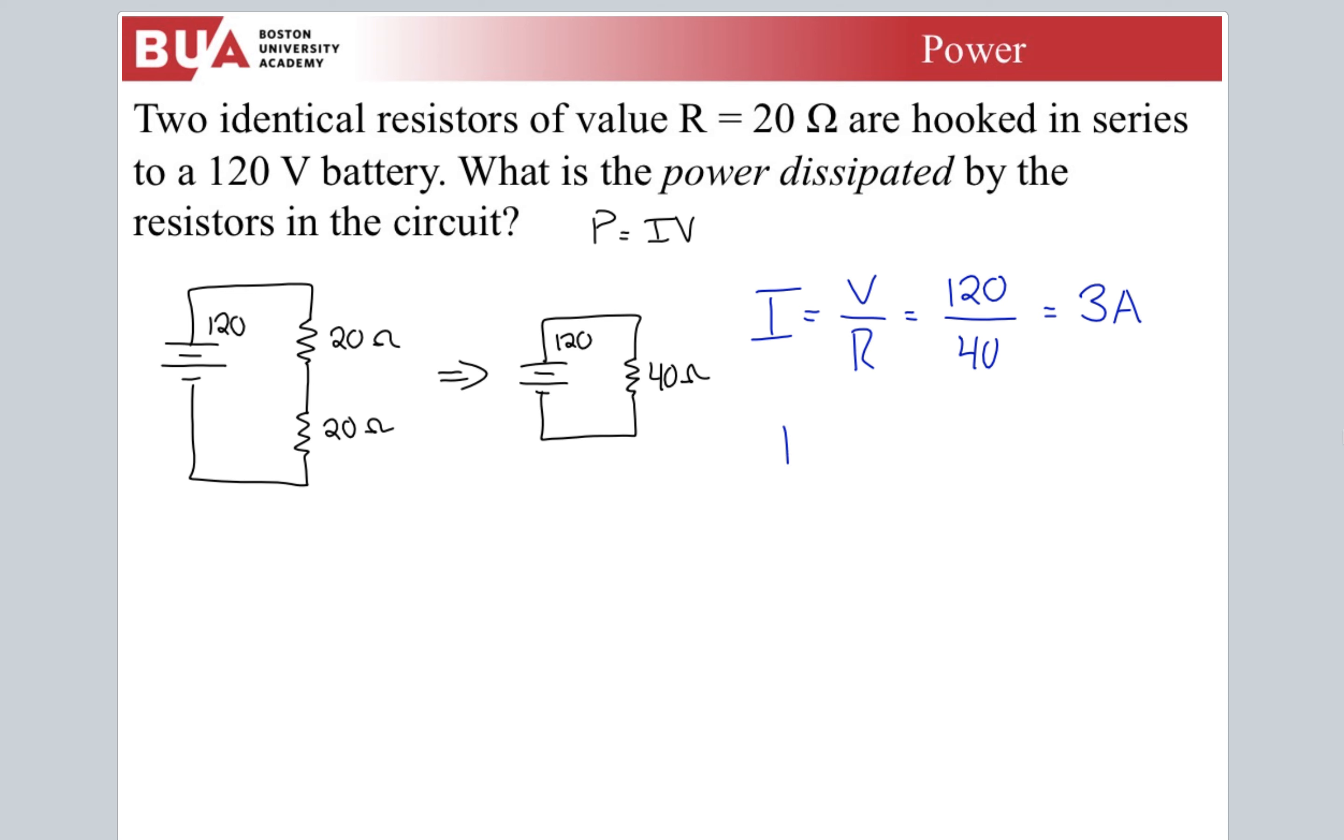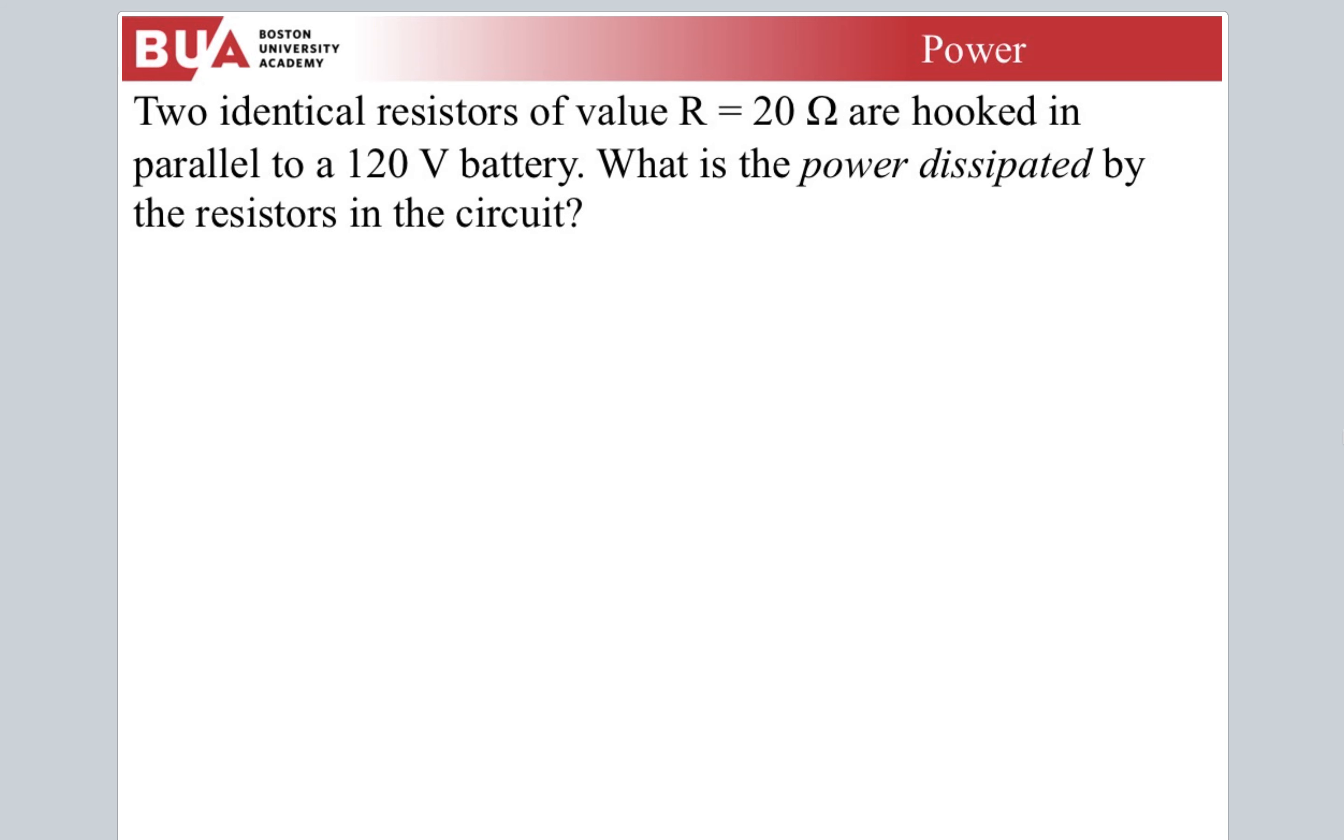Now the power dissipated by the circuit is just the current times the voltage. 360 watts dissipated by that circuit. Now same deal, but they're hooked up in parallel.